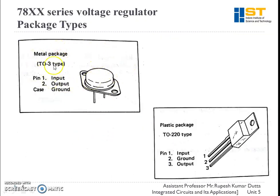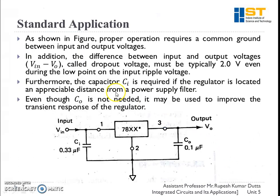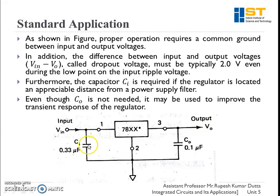These ICs come in different package types: a metal package in which pin 1 and pin 2 are input and output and the case is ground, and a plastic package in which pin 1 is input, pin 2 is ground, and pin 3 is output — so the ground pin is the middle pin. In the standard application shown, the difference between input and output voltage, V_in minus V_out, is called the dropout voltage, and it must typically be at least two volts, even during the low points of the input ripple voltage.